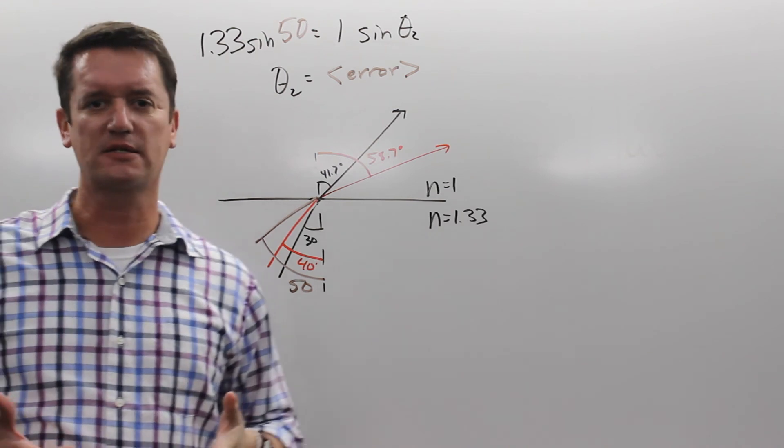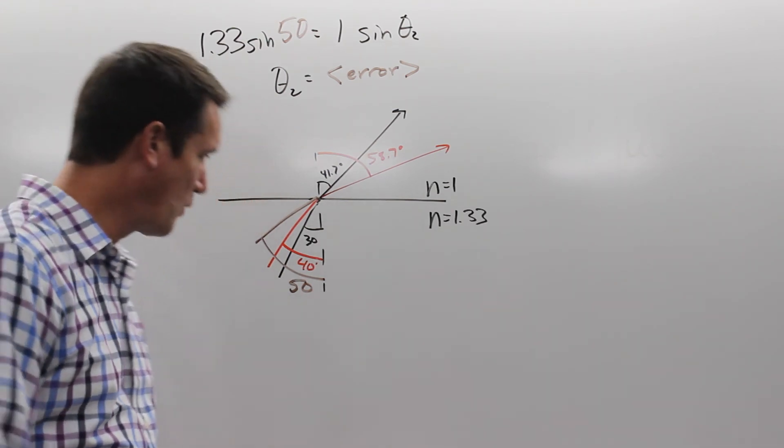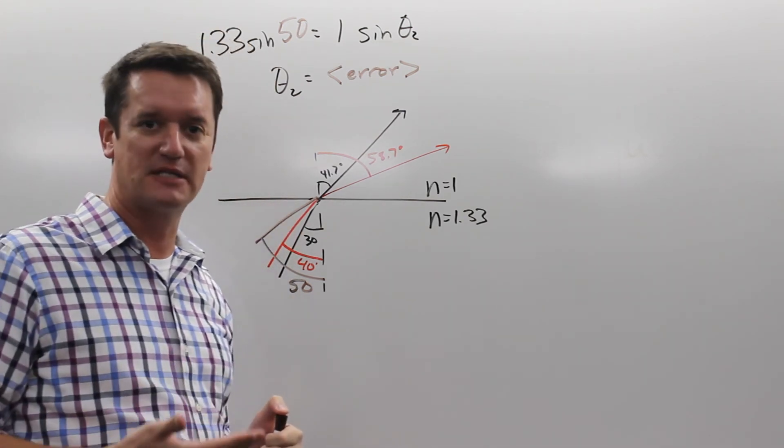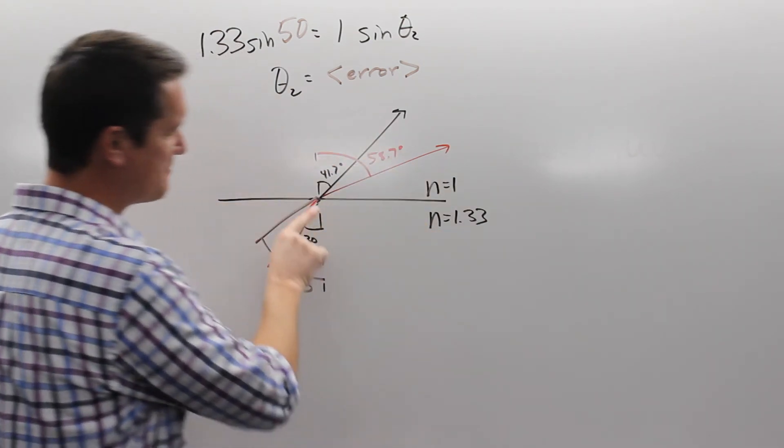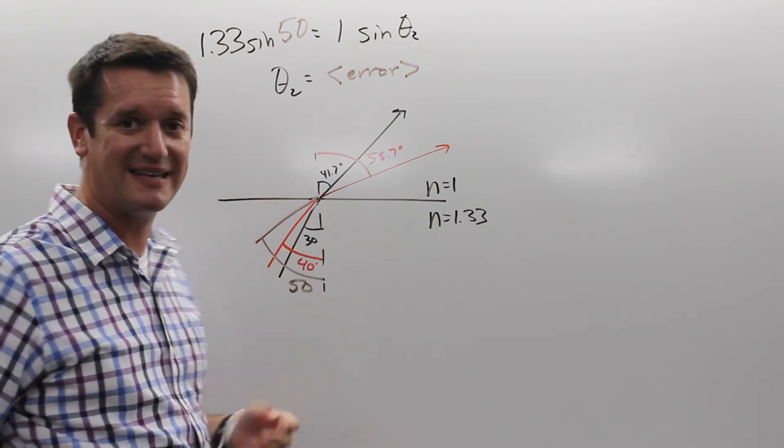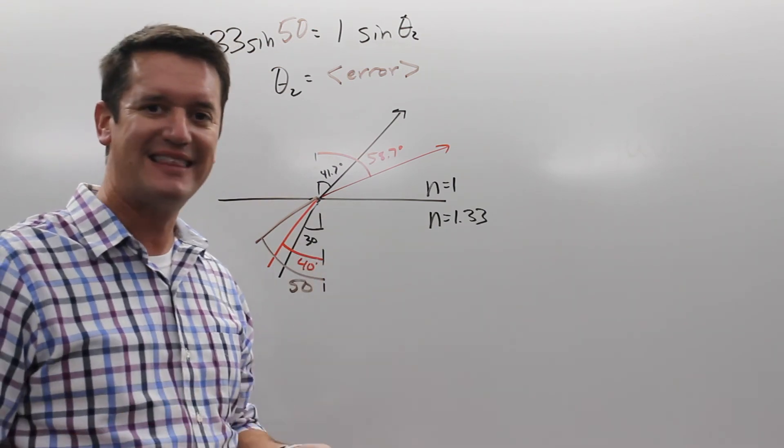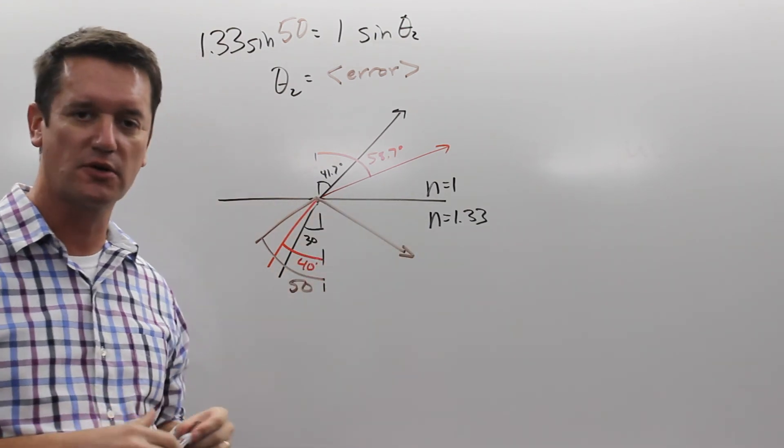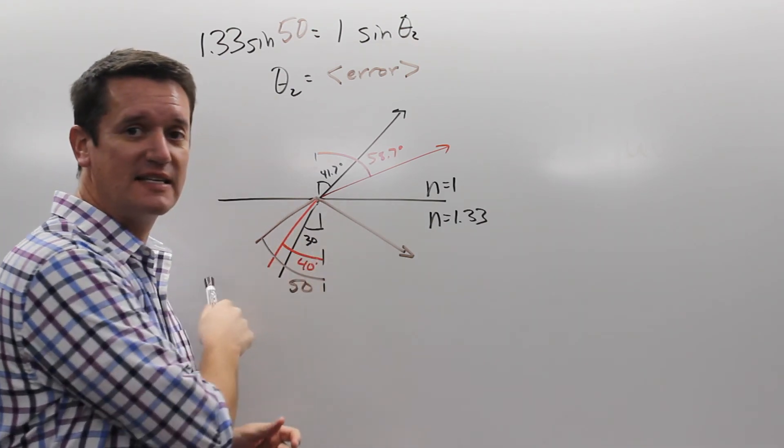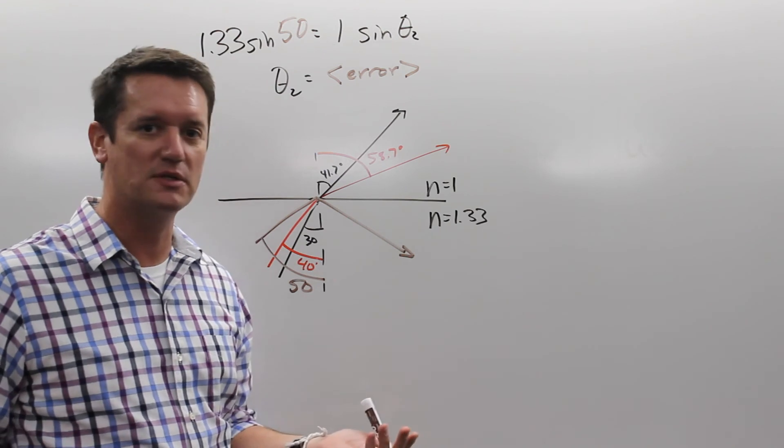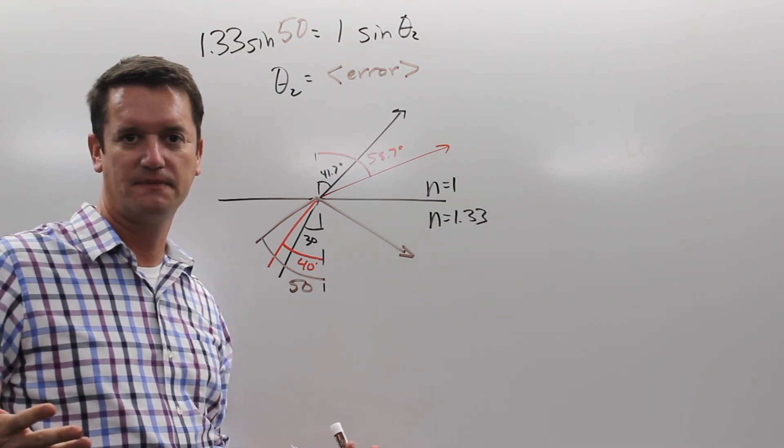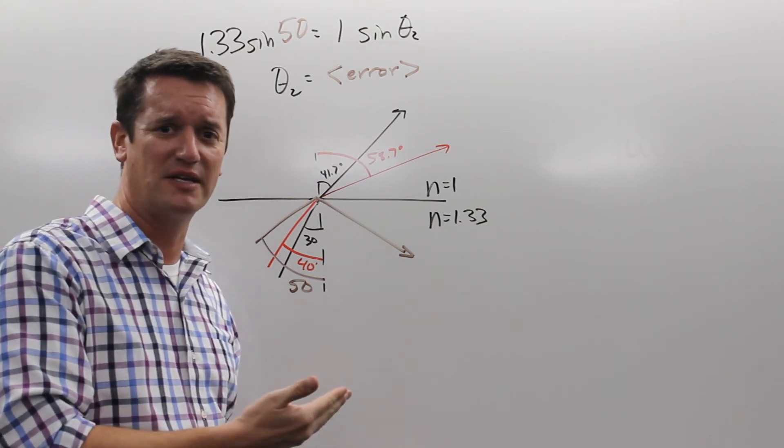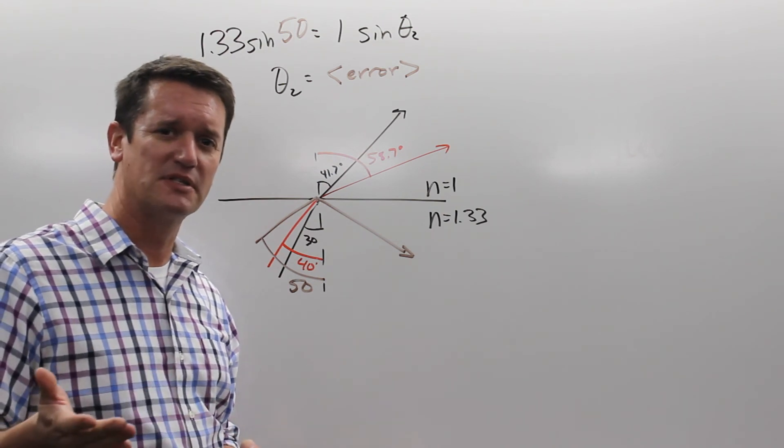Well this actually has to do with something called total internal reflection. There is a point where it bends so much that it doesn't leave the material. When it comes up, it bends, notice it bends away from the normal. There's a point where it's going to bend at 90 degrees. Anything beyond 90 degrees actually doesn't escape the material, and you get what's called total internal reflection. It's actually reflected inside the water. You can't see out of the water after that angle. That angle is called the critical angle. The critical angle is where it bends at 90 degrees. Let's take a look and see some examples of how that works.